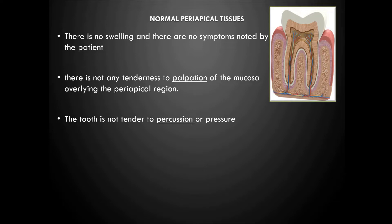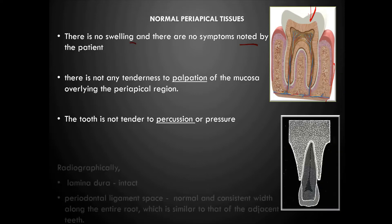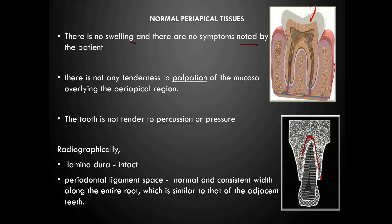In a normal condition, there is no swelling and no symptoms noted by the patient. There is no tenderness to palpation of the mucosa overlying the periapical region, and the tooth is not tender to percussion or pressure. When you palpate the mucosa adjacent to the root apex — vestibular palpation — there is no tenderness. In the radiograph, the lamina dura is intact and the periodontal ligament space is normal with consistent width along the entire root, similar to adjacent teeth.